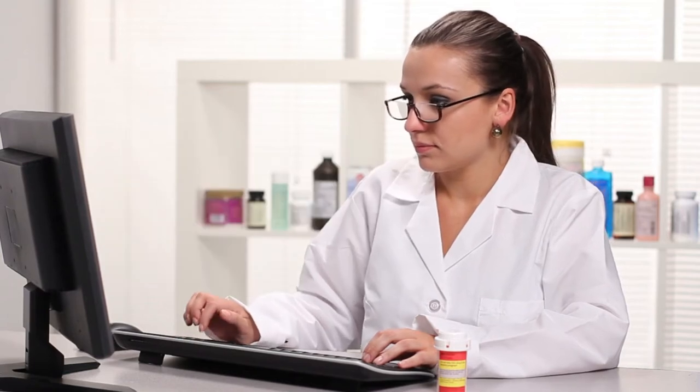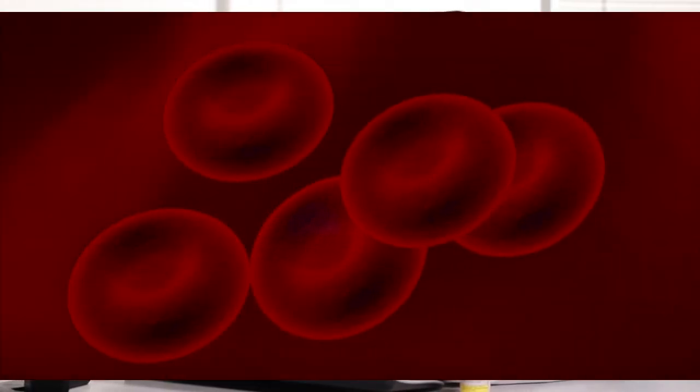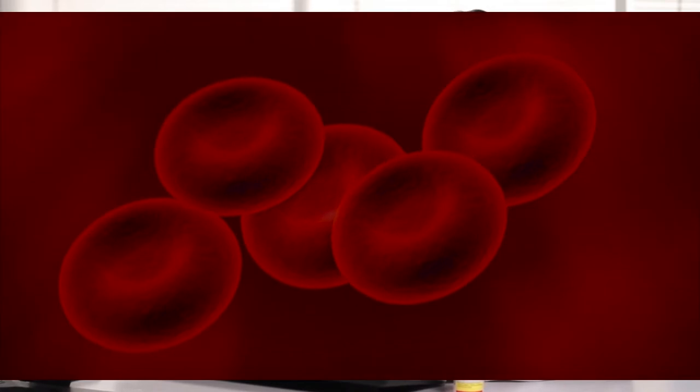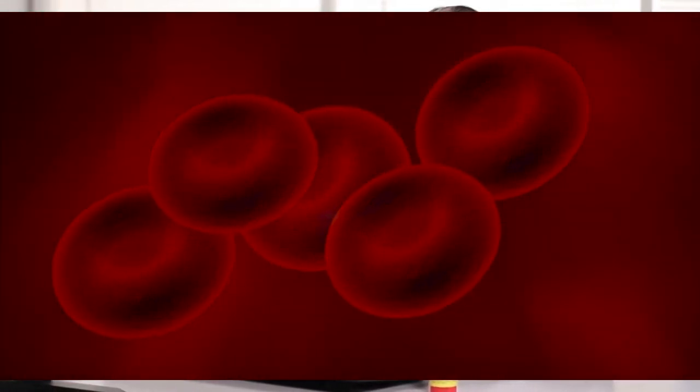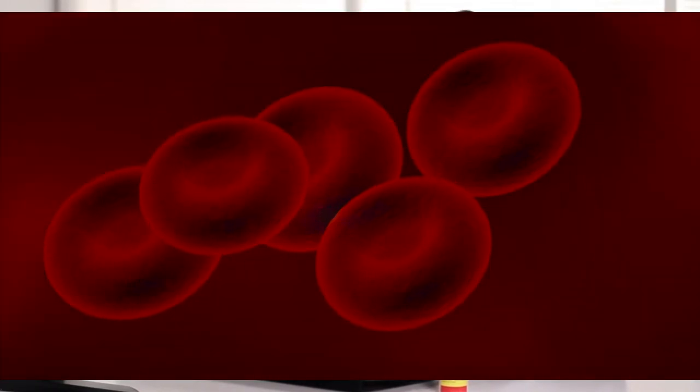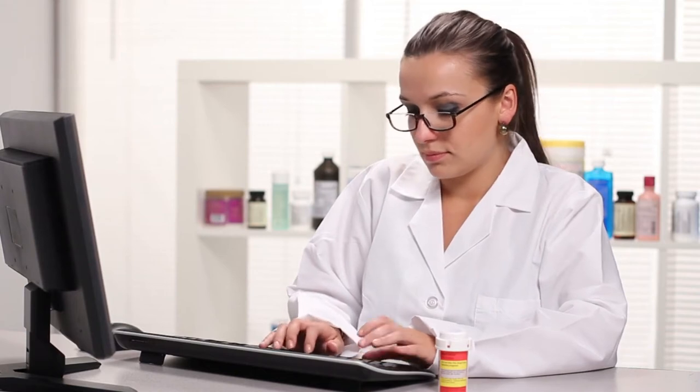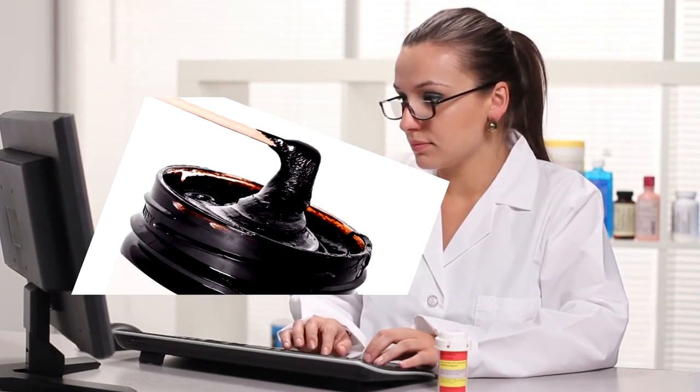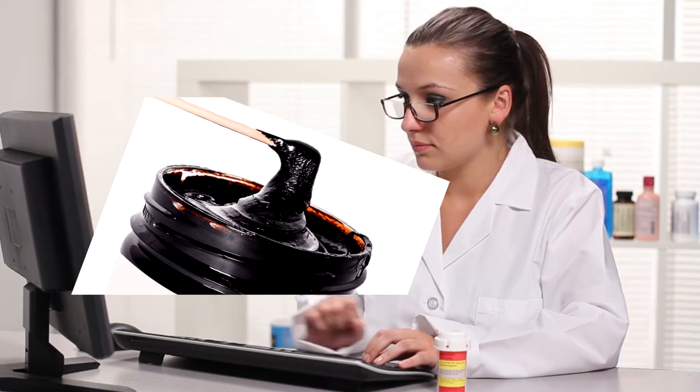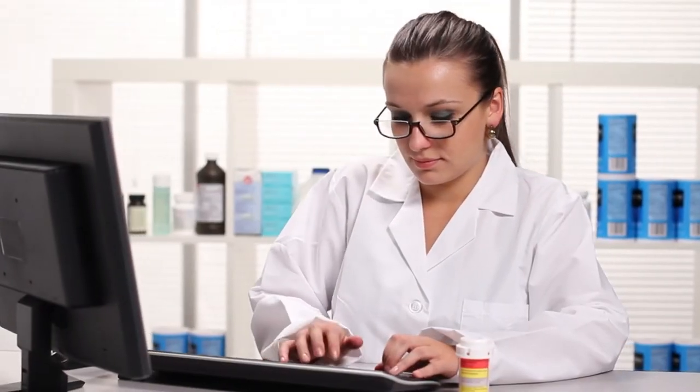7. Infertility. Shilajit is also a safe supplement for male infertility. In one study, a group of 60 infertile men took Shilajit twice a day for 90 days after meals. At the end of the 90-day period, more than 60% of the study participants showed an increase in total sperm count. More than 12% had an increase in sperm motility. Sperm motility refers to the ability of the sperm in a sample to move adequately, an important part of fertility.